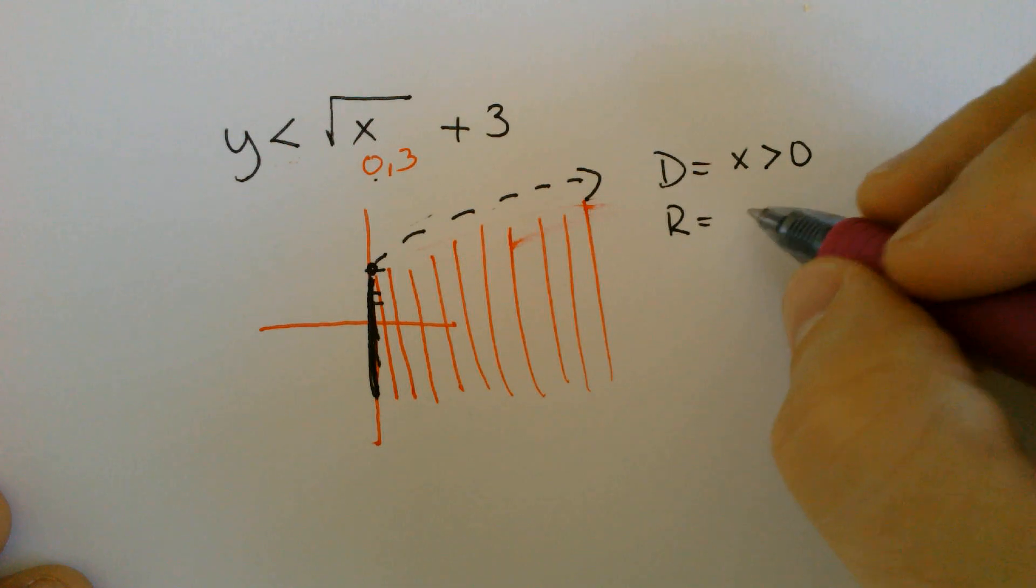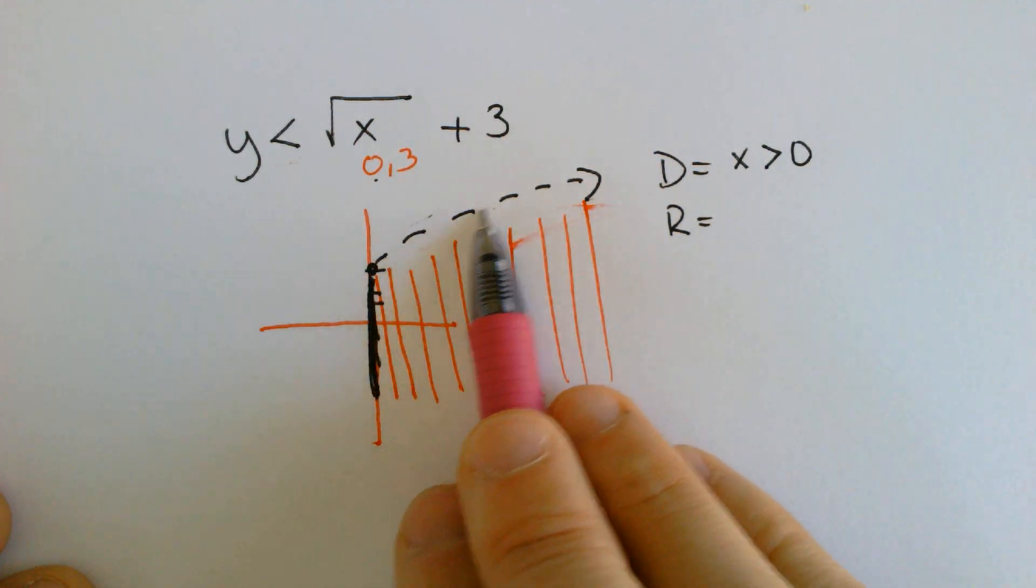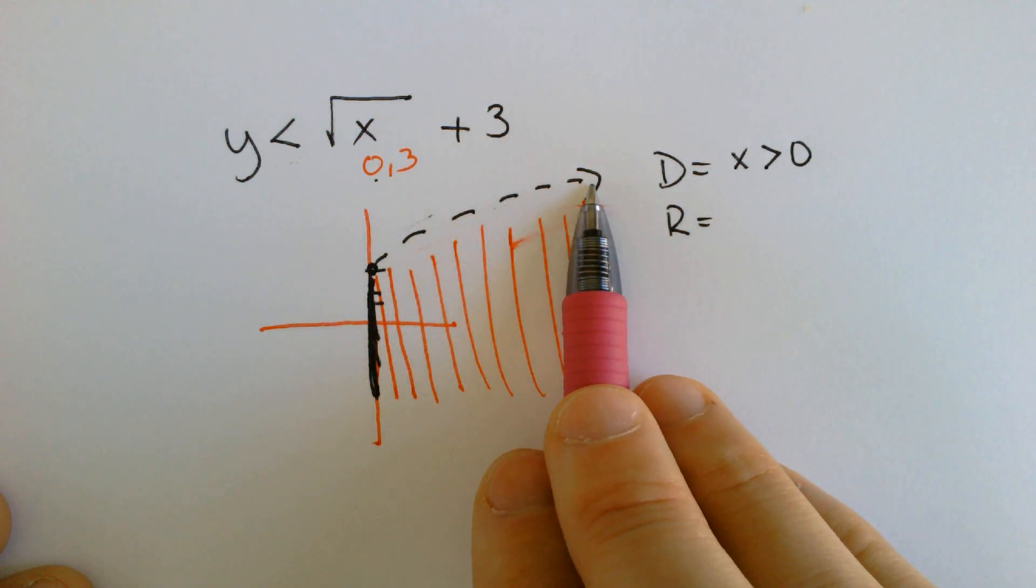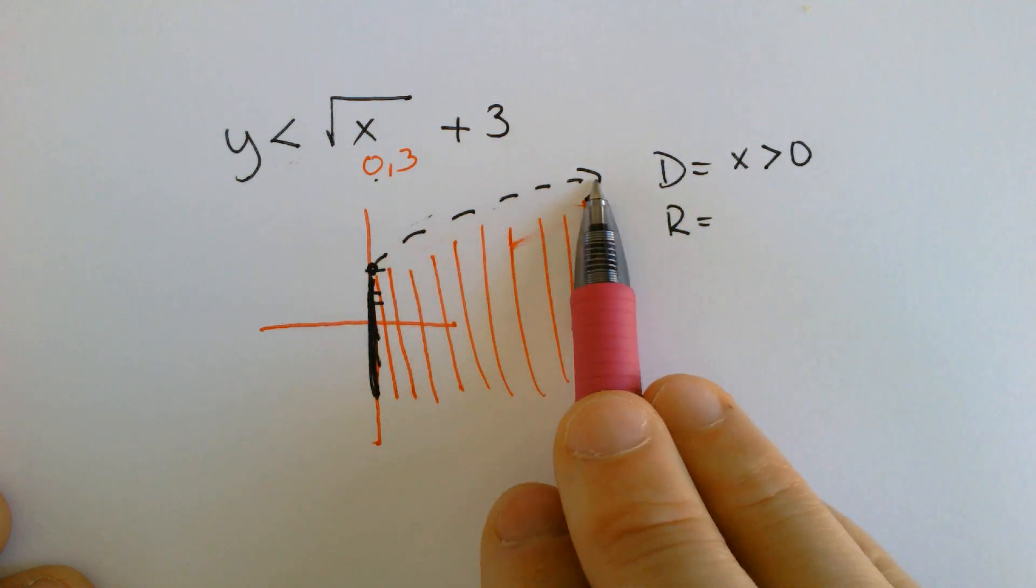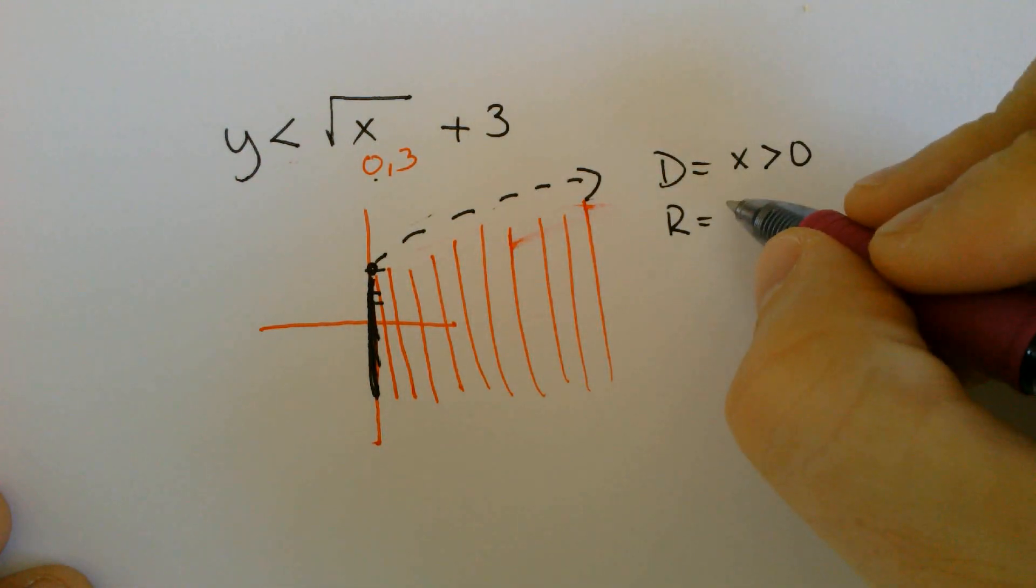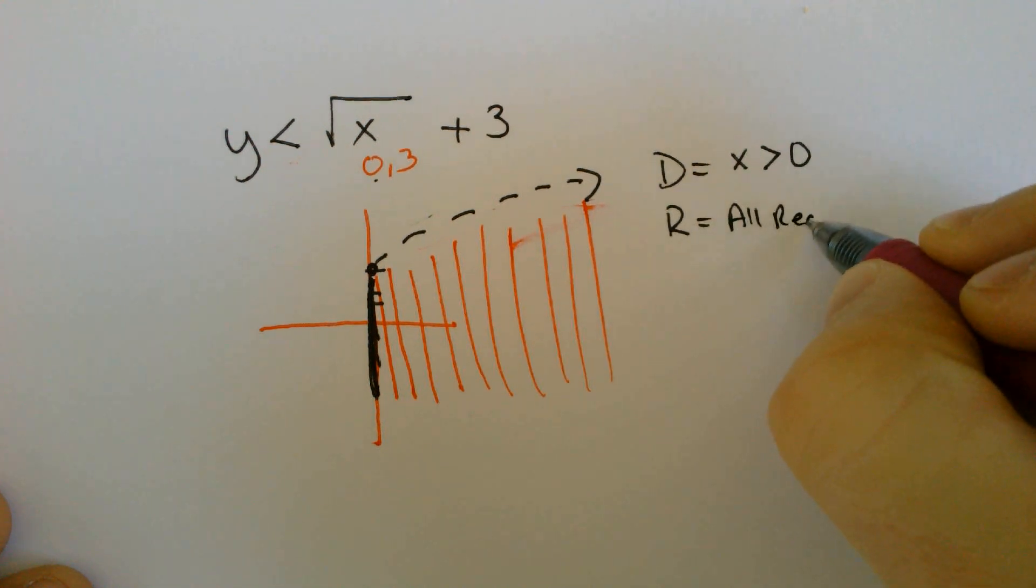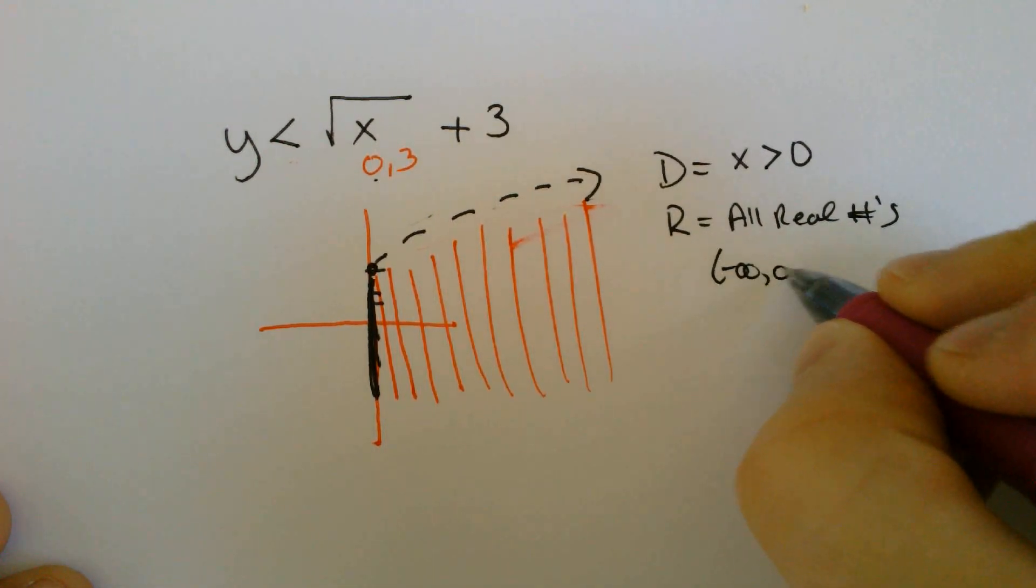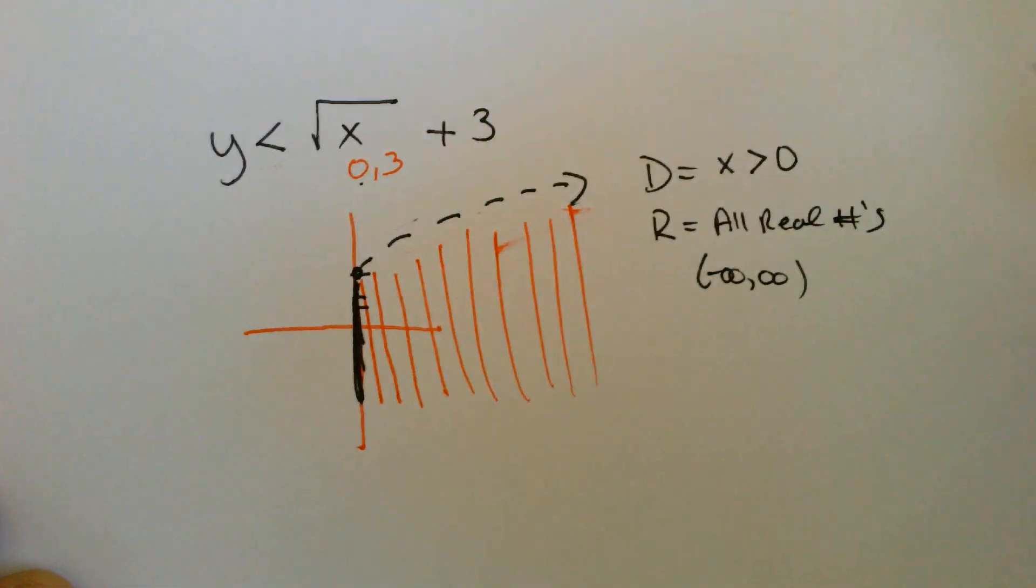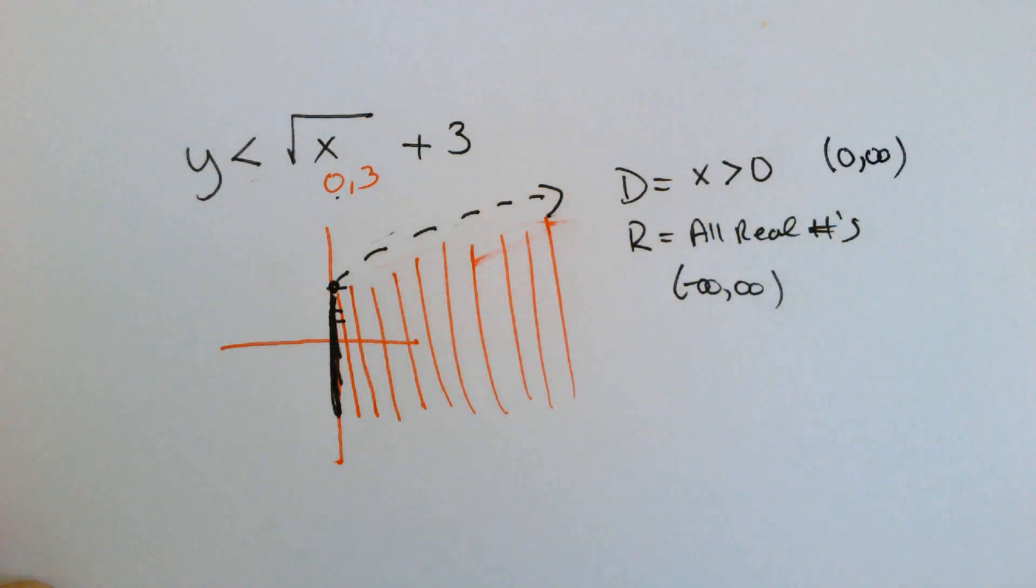And the range is even more elusive because the range, the graph is going up. The graph would have said y is greater than 3, but the shading is going down. Well, if the graph goes up but the shading goes down, that covers everything. So that's all real numbers. In infinity form, it would be negative infinity to positive infinity. And in the x is greater than 0 infinity form, it would be from 0, not including it, to positive infinity.